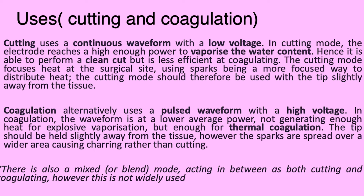Coagulation alternatively uses a pulsed waveform with high voltage. The waveform is at a lower average power, not generating enough heat for explosive vaporization but enough for thermal coagulation. The tip should be held slightly away from the tissue, but heat is spread over a wider area, causing charring rather than cutting. There is also a mixed or blend mode acting between cutting and coagulating, though it is not widely used.